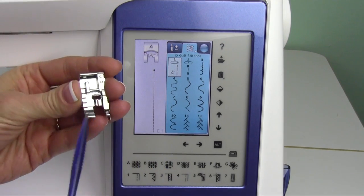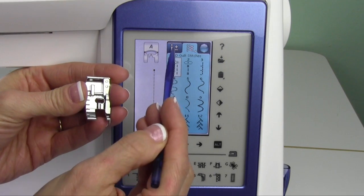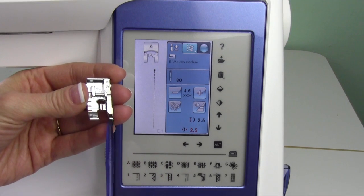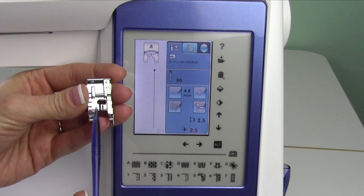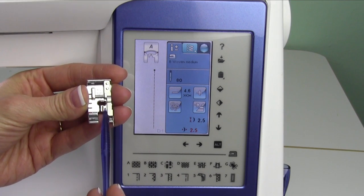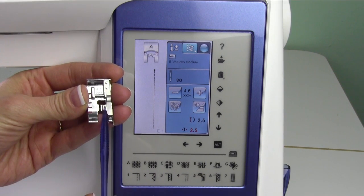I really like the accuracy I can get. Should I need to, I also can move that needle position over even a hair more to create a scant quarter inch. Also by using thinner thread and a quilting needle will help with the accuracy of stitching and matching up intersections as you go.